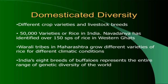Ecosystem diversity refers to varieties of ecosystems in a particular habitat area. Domesticated diversity, or agro-biodiversity, includes crops, livestock diversity, and crop diversity. India had 50,000 varieties of rice. Vandana Shiva's institute has identified 150 species of rice in the Western Ghats. Tribal people like the Warli tribes in Maharashtra have knowledge of which rice species can be grown in which climatic condition.